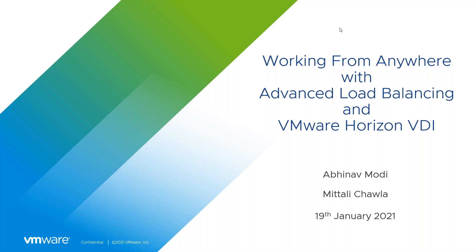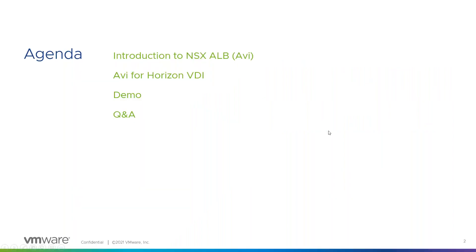Today we'll be talking about VMware Horizon VDI and how Avi Networks, or the NSX Advanced Load Balancer, can help people work from anywhere using these two technologies. What we'll be covering today: a quick introduction to Avi, or as it is now called the NSX Advanced Load Balancer. We'll be looking at various feature sets and what differentiates our architecture from other competitors or legacy offerings. We will look at how this relates to Horizon VDI use cases, and finally we will be doing a demo of Avi's capabilities, both in general and with VDI, followed by any pending Q&A.